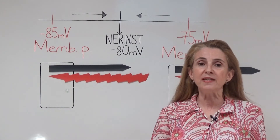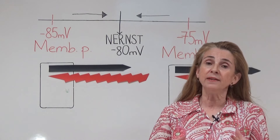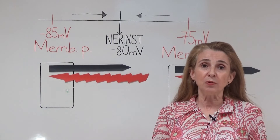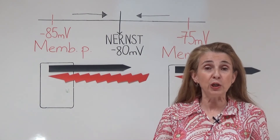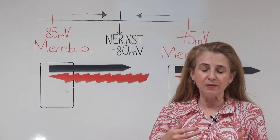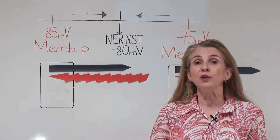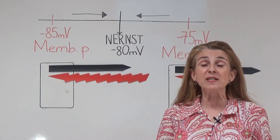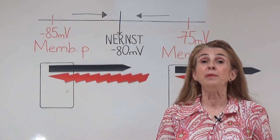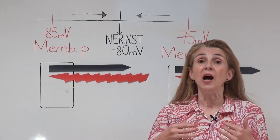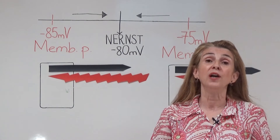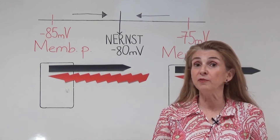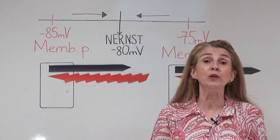When this equalization happens, we reach the Nernst potential and the ions reach an equilibrium. At this equilibrium, the force of the Nernst potential is equal to the force of the membrane potential — they are in opposite directions — and the net electrochemical driving force is zero. In this condition, there will be no ion movement or ion current, and we say that the ion has reached equilibrium. So the other name of the Nernst potential is actually the equilibrium potential.